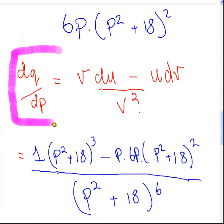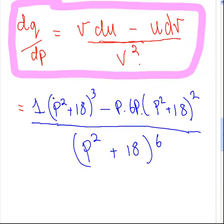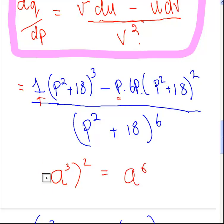The quotient rule is V times dU minus U times dV, all over V squared. So here: dU is 1, V is P squared plus 18 cubed, U is P, and dV is 6P times P squared plus 18 squared. And V squared is P squared plus 18 to the power of 6 — you just multiply the exponent 3 by 2, which is simple power laws.